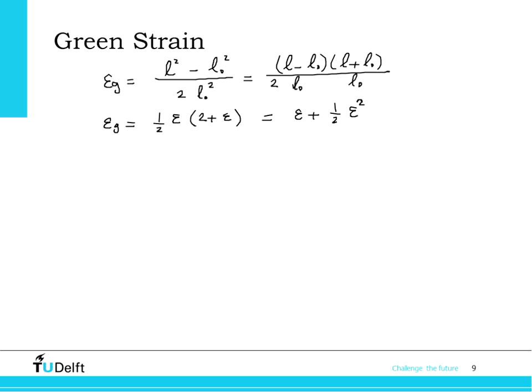Another thing you might notice is that if we go back to the logarithmic strain and expand it with a Taylor series, we get ε + ε² + ε³ + ... and so on. So both Green strain and logarithmic strain are equal to engineering strain whenever strain is sufficiently small that higher order terms can be neglected. The difference cannot be seen except when strains are really large. As I said, it doesn't really matter as long as the stress-strain relationship you use is based on the correct definition of strain you are using for describing the structure.